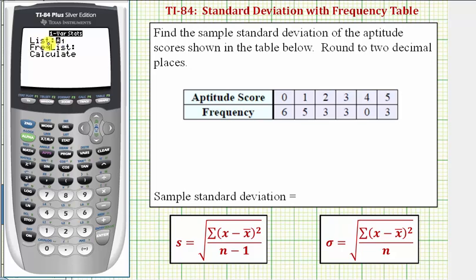Next to list, we want to indicate where the data is located, which is in L1, so this is correct. If it was in L2, we enter L2 by pressing second and then number two.